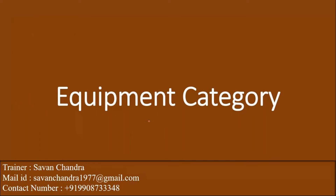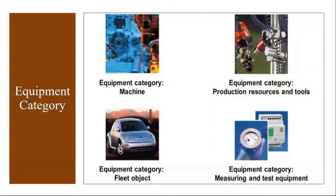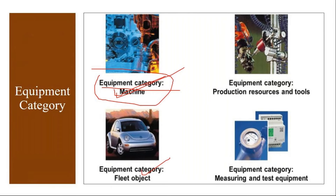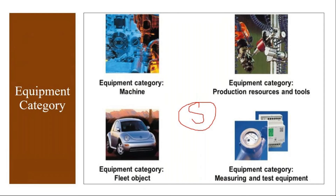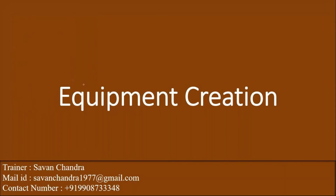Before creating the equipment, we should know about equipment category. Equipment category tells you what type of equipment it is - whether it is a machine, a fleet object or vehicle, a PRT (production resource tool), or test equipment. Equipment category is mandatory to create an equipment. In CS, we will be using the equipment category 'Y' for customer equipment. In PM modules, you might use 'M' for machine, 'Q', or 'P' for PRTs. But in customer service module, we use the customer equipment category.